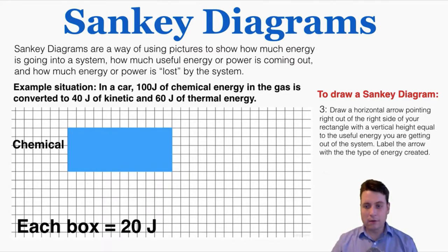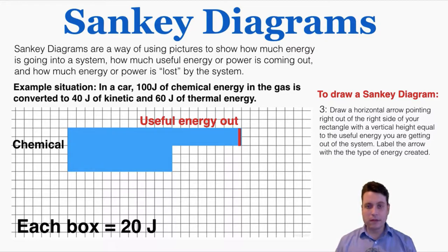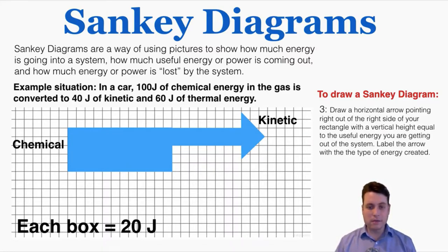Step three is to draw a horizontal arrow pointing right out of the right side of your rectangle, with a vertical height equal to the useful energy you are getting out of the system, and label the arrow with the type of energy created. I'm drawing this on the top of the right side of the rectangle. Because the goal of using gas in a car is to get kinetic energy, the useful energy here is 40 joules. Since each box is 20 joules, I make the arrow two boxes high to represent 40 joules, and I label it kinetic energy.